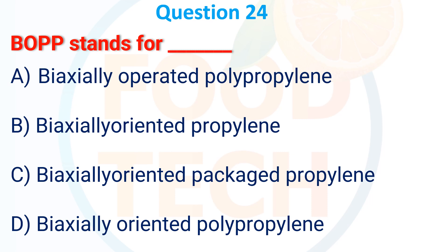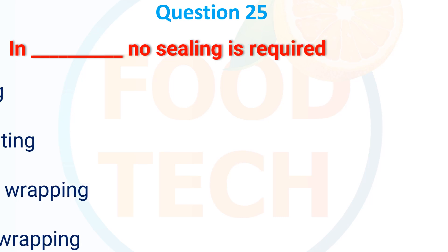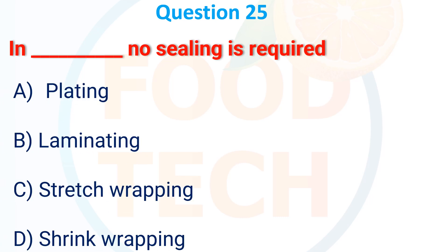BOPP stands for: (a) Baxley Oriented Polypropylene, (b) Raxially Oriented Polypropylene, (c) Biaxially Oriented Package Polypropylene, (d) Biaxially Oriented Polypropylene. The answer is (d) Biaxially Oriented Polypropylene.